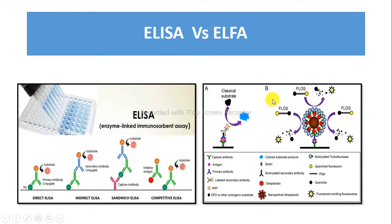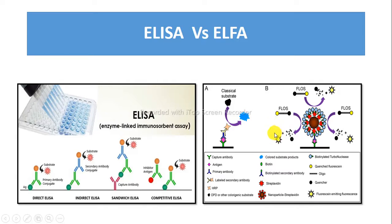in ELFA the substrate used is fluorescent. That's why ELISA detects the development of color on the solid phase, whereas ELFA detects the development of fluorescence on the solid phase. ELISA is a sensitive method, but ELFA is